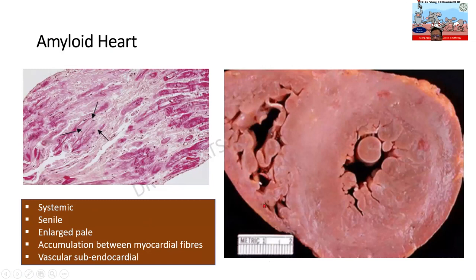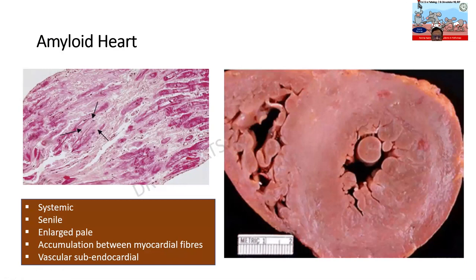Organ changes in amyloid — the heart: there is massive enlargement with pale myocardium. We call it concentric hypertrophy because all the walls are uniformly thickened. Microscopically, between the dark pinkish-red myocardial fibers we see pale, eosinophilic, acellular, amorphous material deposited. This creates pressure effects — it can impinge on the conduction system, causing conduction defects or cardiac arrest. This can happen in systemic or senile amyloidosis.